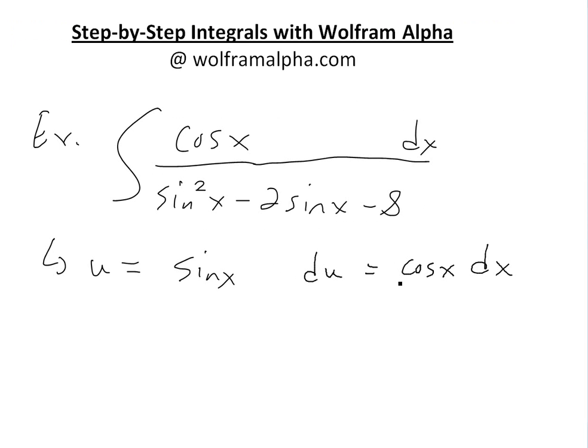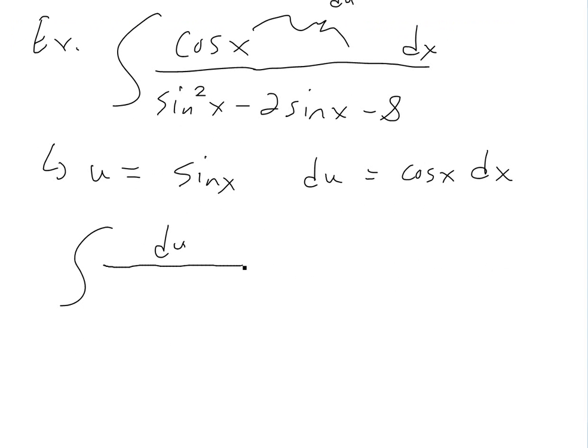And then the derivative of this, du, is just equal to cosine of x dx. And now what we can do here, just plug this all back in there. So we're going to get dx is cosine, this equals basically du. We're going to get du over u squared minus 2u minus 8.